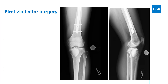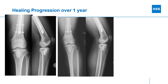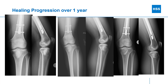This was the first visit after surgery for the patient, and you can see the bone is filled with that absorbable cement, which initially is much denser than the surrounding bone. Here you can see how the healing of that bone cavity takes place over the following year. The healthy bone begins to invade the bone cement, replacing it with normal bone matrix, and subsequent x-rays show the bone cement gets smaller and smaller until it's replaced entirely by normal healthy bone.